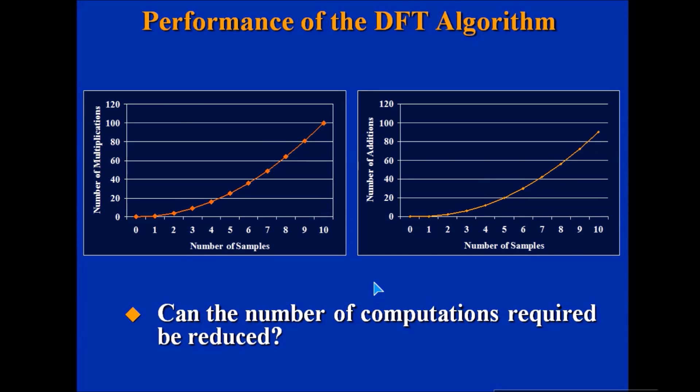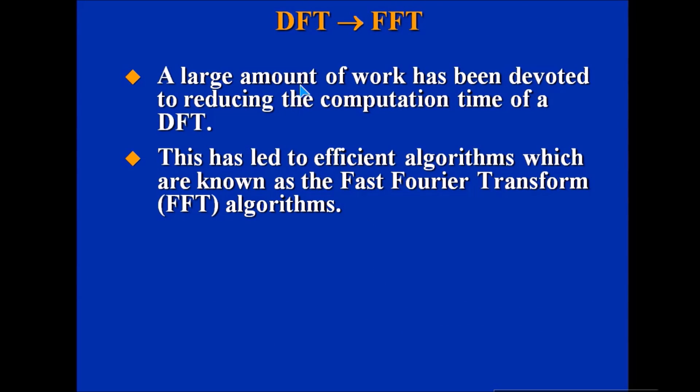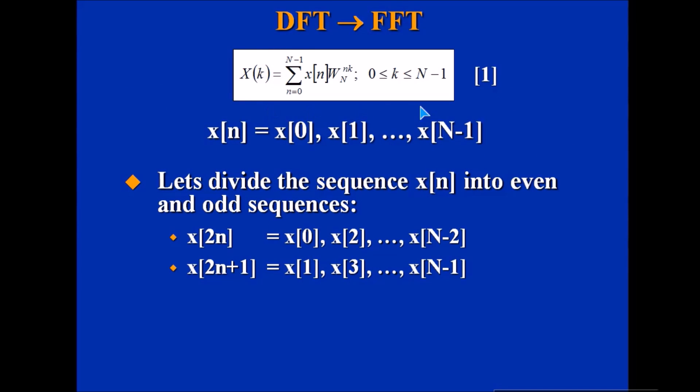Can we reduce the computations? Large amounts of work have been done on this, and we have come up with the Fast Fourier Transform. This is the equation we are talking about. What we are going to do is divide the sequence into even and odd sequences: x(2n) and x(2n+1).